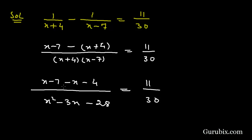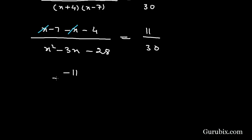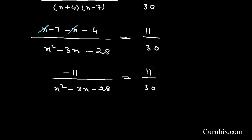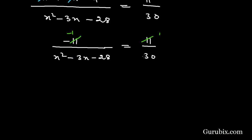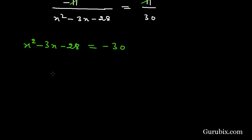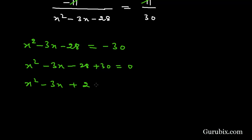We can cancel out the x terms in the numerator. The left hand side simplifies to minus 11 over (x squared minus 3x minus 28), equals 11 over 30. We cancel the 11 on both sides, leaving minus 1 over (x squared minus 3x minus 28) equals 1 over 30. Cross-multiplying gives x squared minus 3x minus 28 equals minus 30, which simplifies to x squared minus 3x plus 2 equals 0.